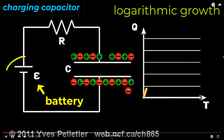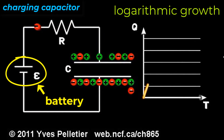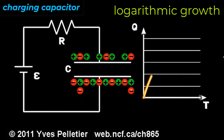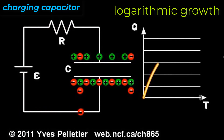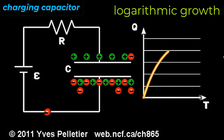Check out this capacitor being charged by the battery. The battery is doing work to move charges from the top plate to the bottom plate. Look at the graph of charge versus time. It's a logarithmic growth curve that starts off steep and strong because there's no mutual repulsion to get in the way. But as the capacitor gets charged, things slow down — it becomes increasingly difficult to take a negative charge from the top plate and move it to the already negatively charged bottom plate because of mutual repulsion.